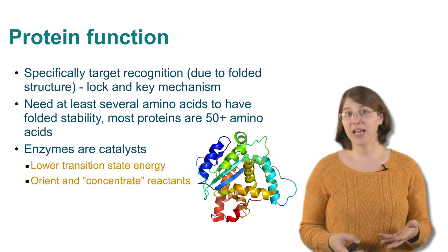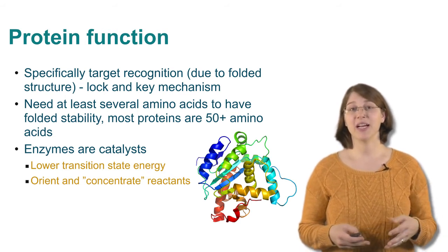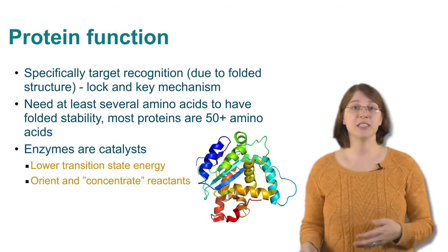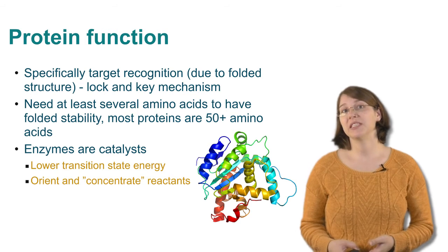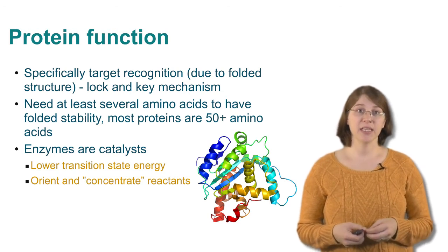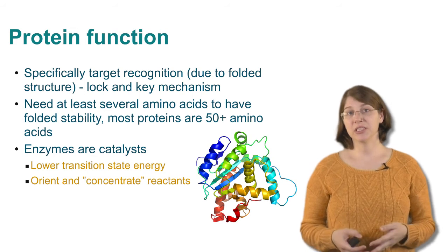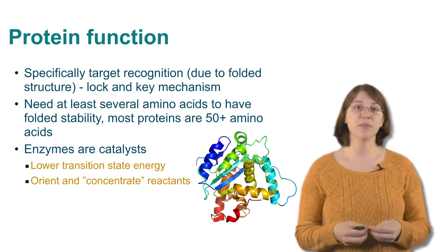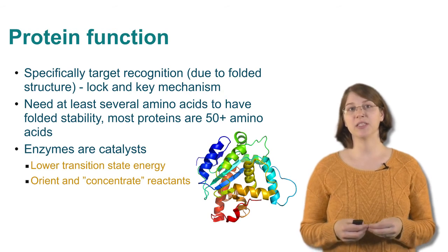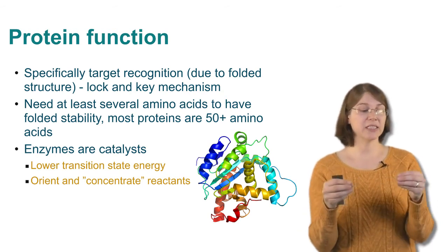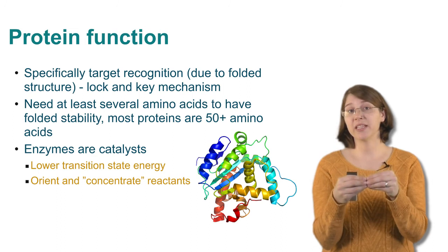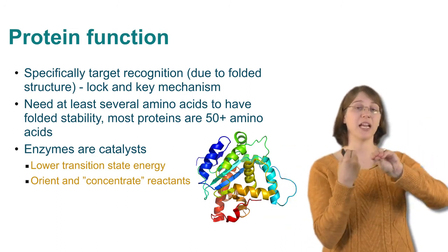Usually you'll need at least a few amino acids for this very specific matching to occur. Between 5 and 8 amino acids has been shown to bind a specific target relatively strongly. Most proteins have between 50 and maybe a couple of thousand amino acids to generate their function, so we would need peptide bond formation to occur many, many times on early earth to generate functional proteins. Some functional proteins actually catalyze reactions — bond breaking or bond making — and these proteins are called enzymes. They can either lower the transition state energy of the molecule to help the reaction proceed, or they can serve to orient and concentrate the reactants, getting them together so they meet perfectly and react more quickly than if they were floating around in solution.